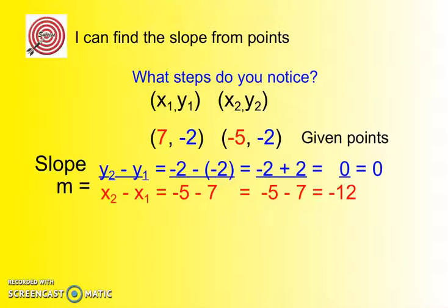Today we're not going to look at it in graphs but we're going to actually look at some ordered pairs of two points that are taken off of a line. Here's our first example. We have 7, negative 2 and negative 5, negative 2. These are two points that were taken off of a line. I want you to notice the steps that are taken. Are they similar to what we did in the last video?